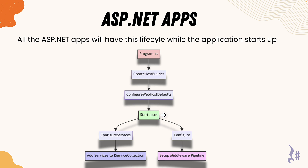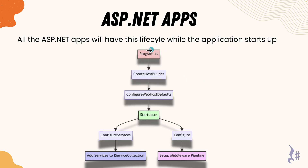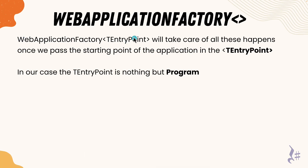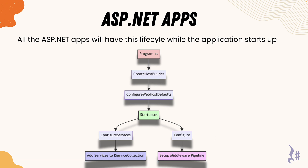Just focusing on the program.cs and startup.cs files and how the lifecycle works — with this understanding, Web Application Factory will take care of the entire lifecycle once we pass the starting point of the application as the generic type entry. In our case, the entry point is the program file. So if you pass 'Program' as the entry in Web Application Factory, it will automatically handle all the setup ceremonies and run the entire application in memory. That is what is happening behind the scenes.